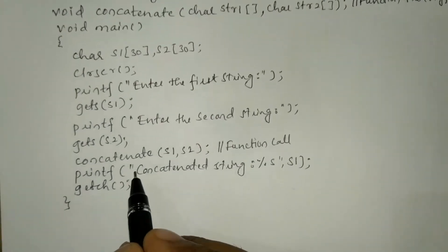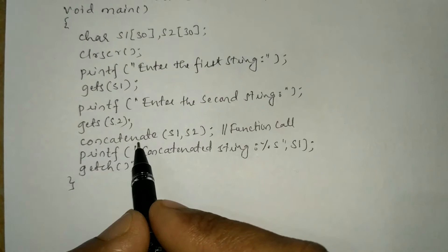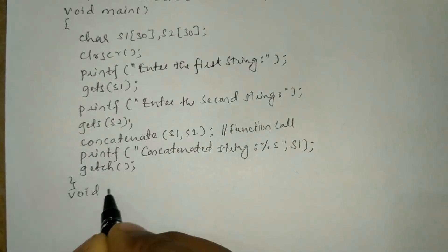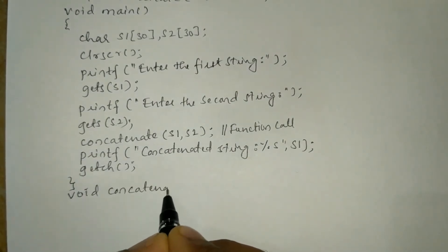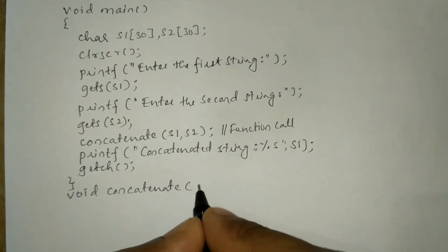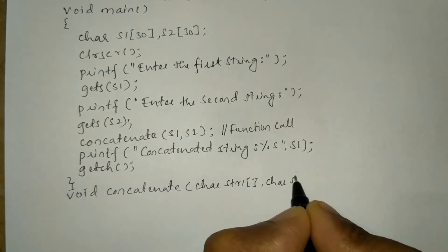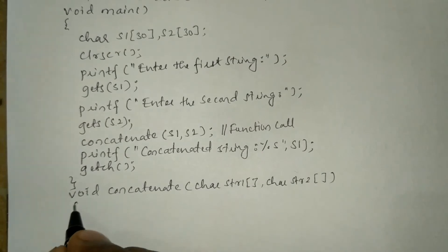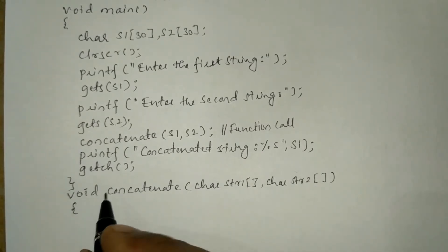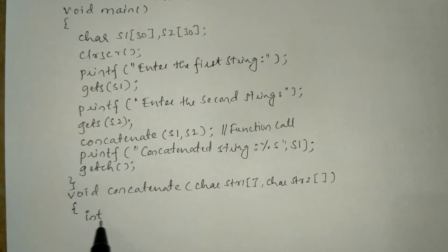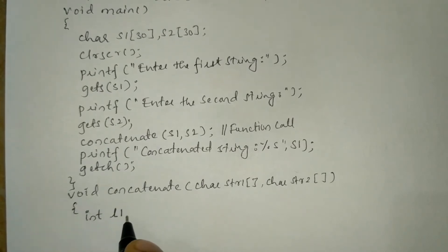Now it's time to define this particular function. We define it by writing void concatenate, and inside the round bracket we write char str1, comma, char str2 — that is the second string — and a closing brace. The curly open brace indicates this is the beginning of the body of the function definition. Next, we are going to declare some local variables. Whenever we declare any variable inside a function definition, they are accessible only within that function definition — hence they are called local variables.